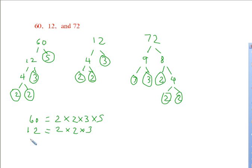And 72 is going to be equal to 2 times 2 times 2 times 3 times 3. Just to make sure I get these right, because this one's a little bit more complex.